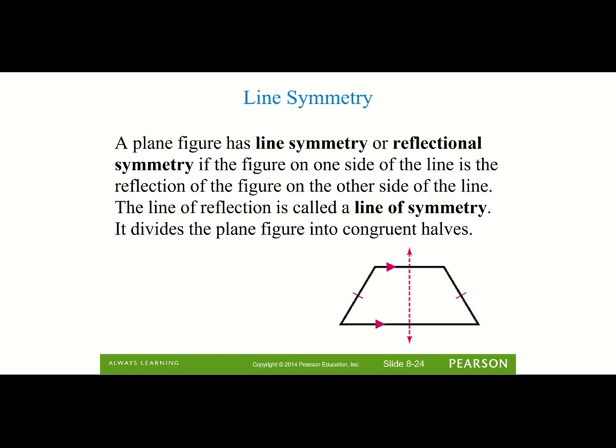Next, we're going to talk about line symmetry, or reflectional symmetry. Basically, line symmetry is like taking a shape and folding it into two equal parts. A line of symmetry divides a plane figure into two congruent halves. Some figures have no line symmetry, others have one line of symmetry, and others have multiple lines of symmetry.